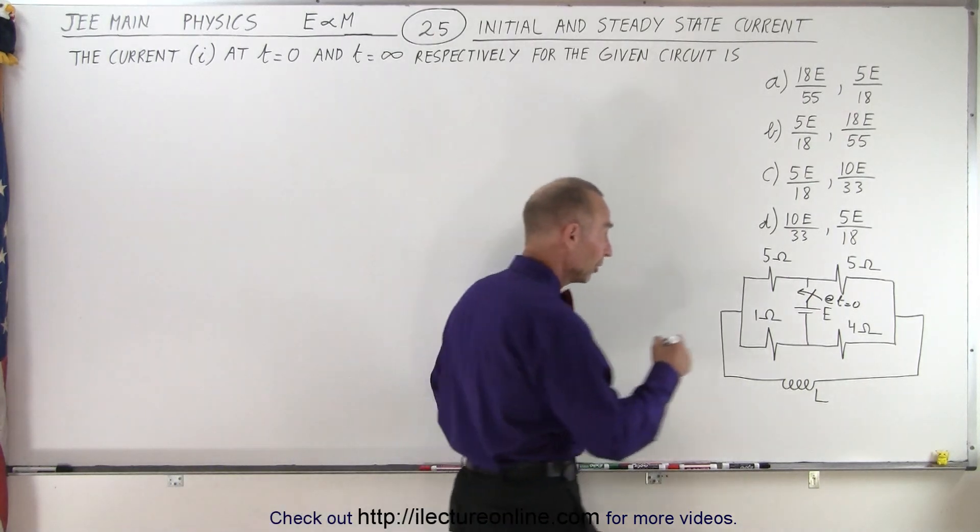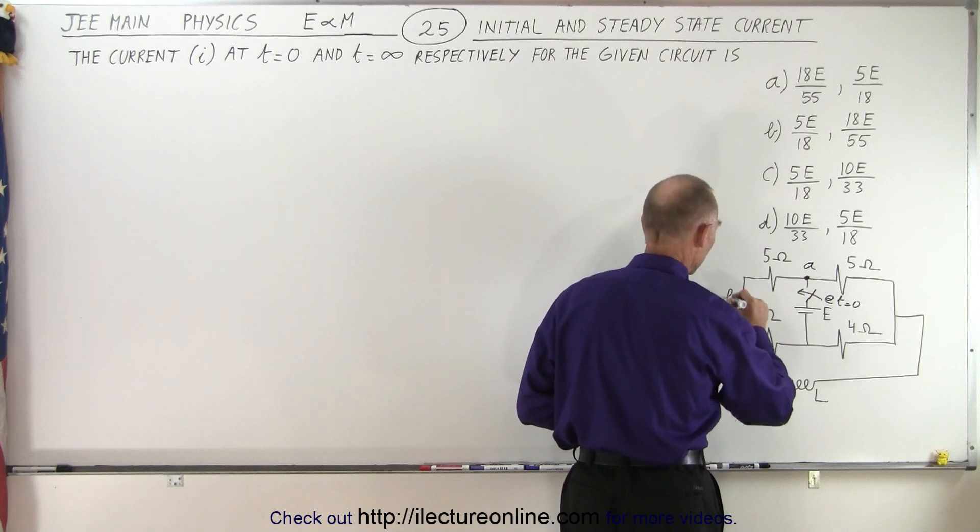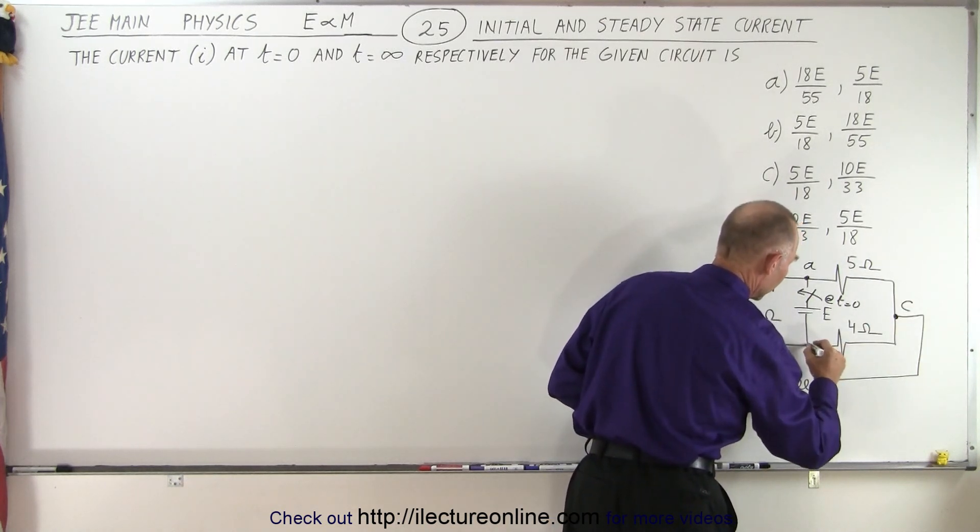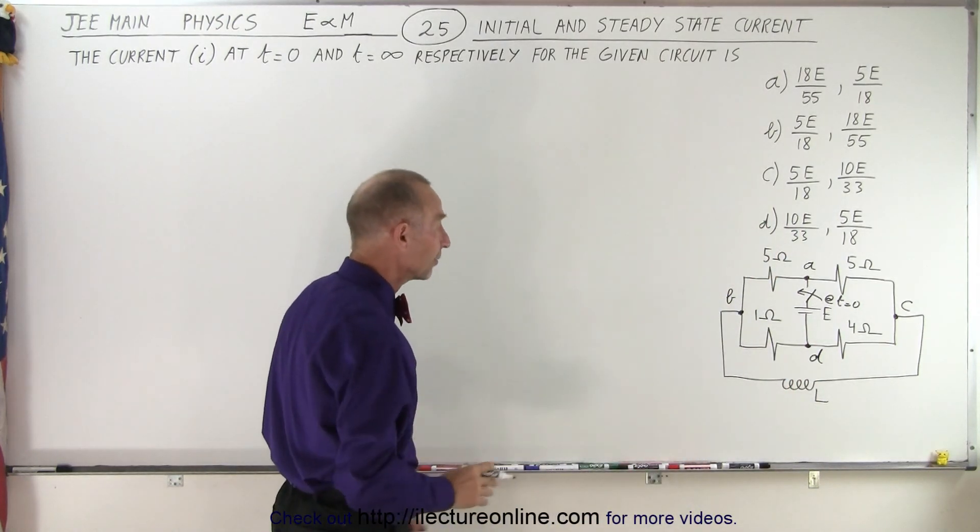Now notice there are four nodes, we have node here, we can call that node A, here we can call this node B, there let's call this node C, and let's call this node D. And let's redraw the circuit to try and make more sense out of it.